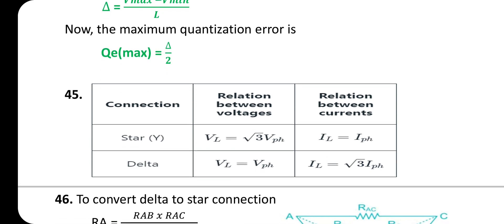Star and delta connection relations: For star connection, V_L = √3 × V_ph and I_L = I_ph. For delta connection, V_L = V_ph and I_L = √3 × I_ph.